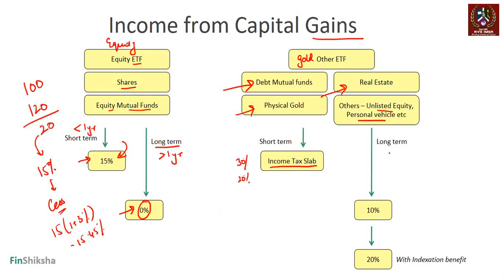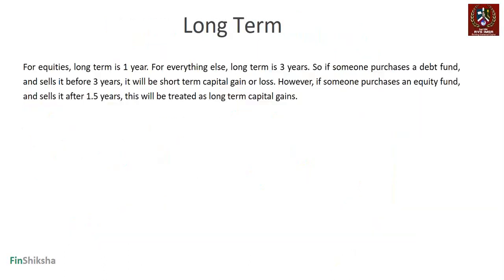For non-equity instruments, long-term capital gain tax is 10% only on the gain, or 20% with indexation benefit. In certain asset classes, 20% with mandatory indexation is now required. Importantly, for non-equity asset classes, short term means less than three years and long term means greater than three years — a different definition from equities. In summary: equity short-term 15%, long-term 0%; debt/gold/real estate short-term at income tax slab, long-term 10% or 20% with indexation.